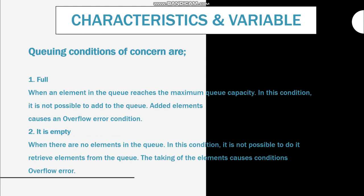There are two queuing conditions of concern. First is full — when the elements in the queue reach the maximum queue capacity, it is not possible to add more elements, causing an overflow error condition. Second is empty — when there are no elements in the queue, it is not possible to retrieve elements from the queue, causing an underflow error condition.